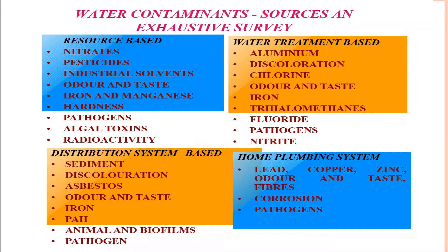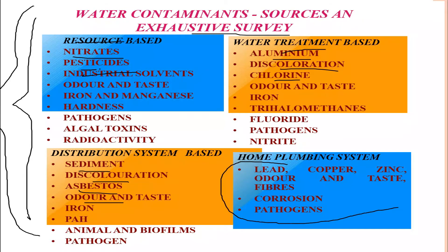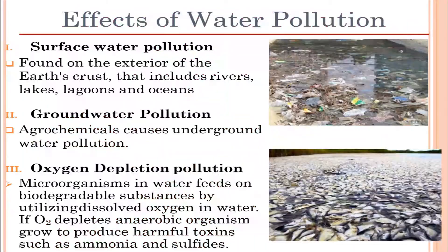Talking about water contaminant sources — this is an exhaustive survey conducted in India. The survey covers resources based on nitrates, pesticides, and industrial solvents; water treatment parameters such as aluminium, dechlorination, chlorine, and odor and taste; distribution issues such as sediment, discoloration, and odor; and important metals that may heavily pollute water, such as lead, copper, and zinc.